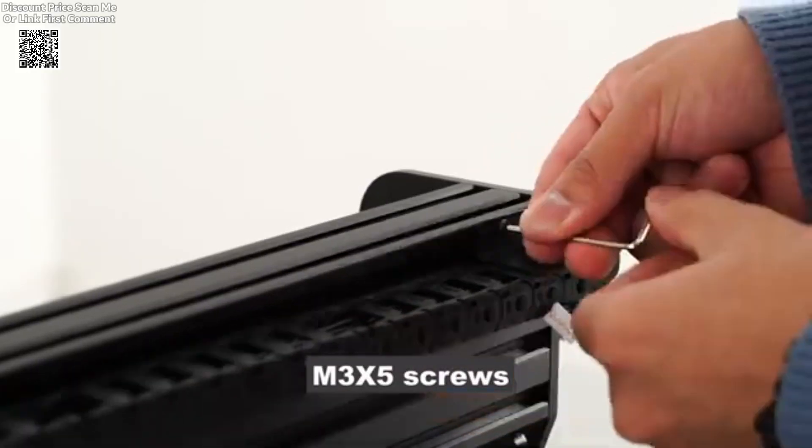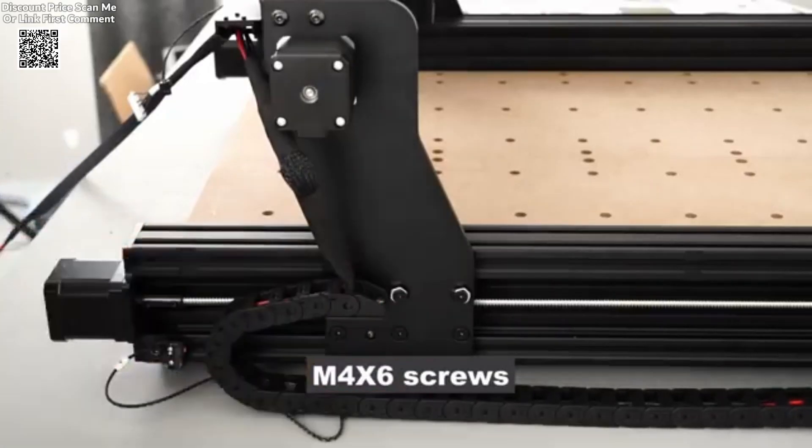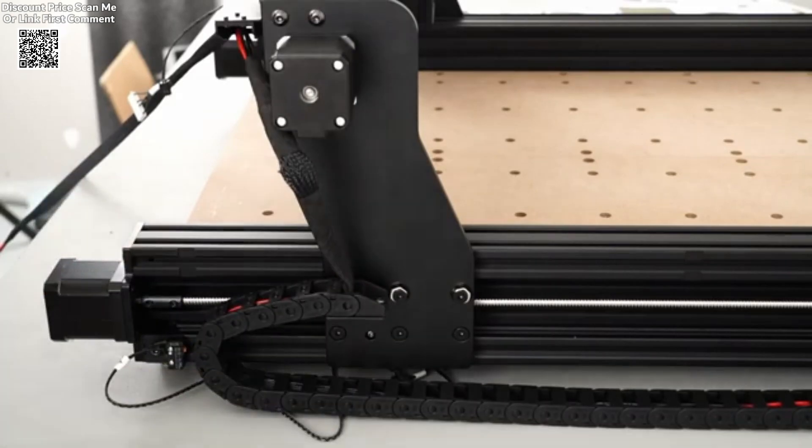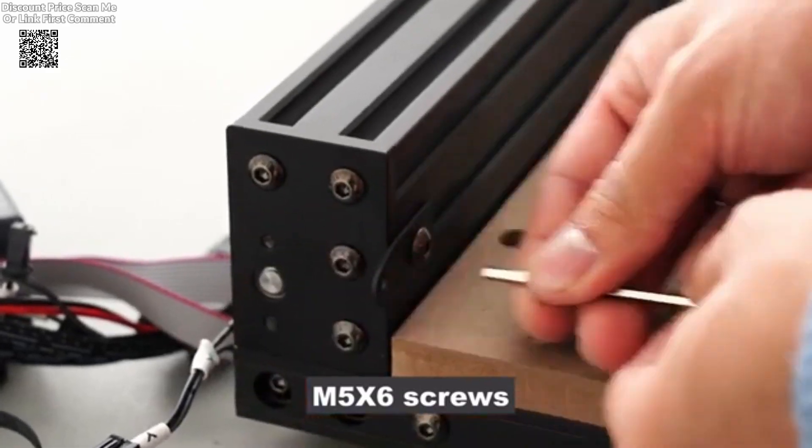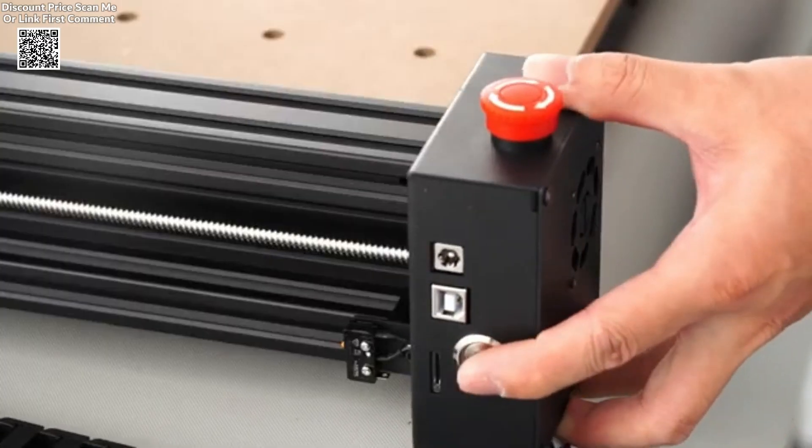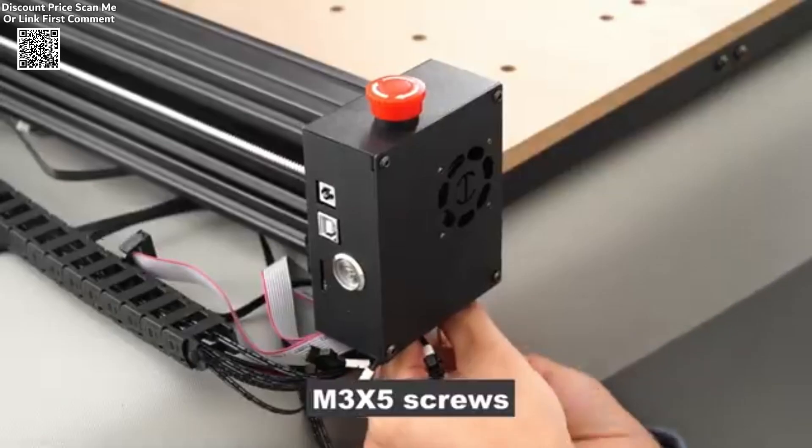The machine also includes an ESP32 chip, a 32-bit microprocessor that supports high-speed dicing and comes with a built-in Wi-Fi module. This allows for seamless control via computer, app, or screen, offering users multiple options to operate the machine.